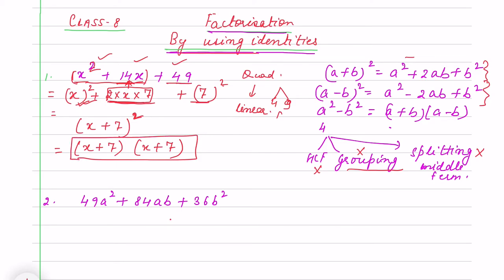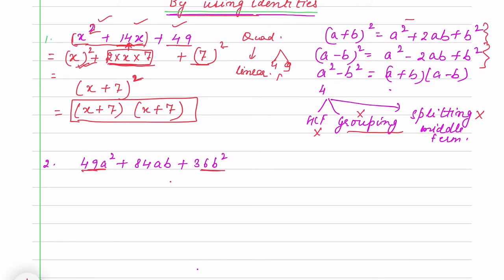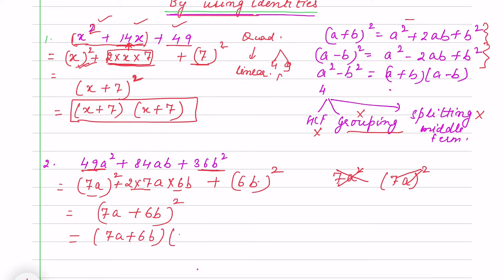Same way, check the first and last: 49a² + 84ab + 36b². 49 is 7², so 7²a². 36 is 6²b². Now 2 × 7a × 6b = 84ab. So again it is (a+b)², which is (7a+6b)².